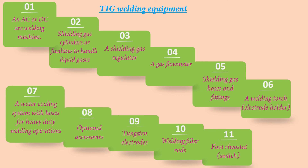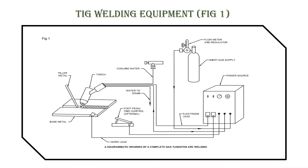TIG Welding Equipment: 1. An AC or DC arc welding machine. 2. Shielding gas cylinders — all facilitate to handle liquid gases. 3. A shielding gas regulator. 4. A gas flow meter. 5. Shielding gas hoses and fittings. 6. A welding torch and electrode holder. 7. A water cooling system with hoses for heavy duty welding operations. 8. Optional accessories. 9. Tungsten electrodes. 10. Welding filler rods. 11. Foot rheostat switch. TIG welding equipment is shown in the figure.